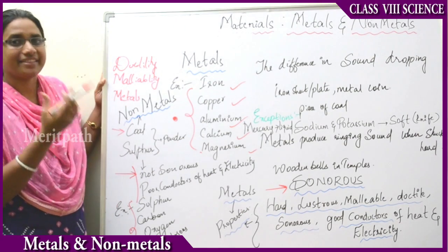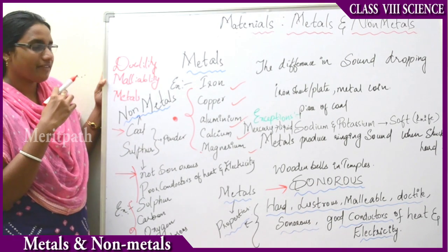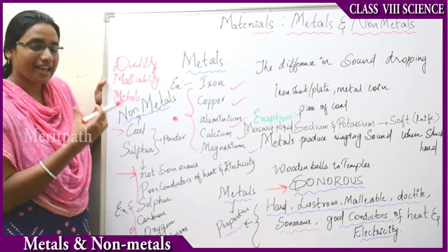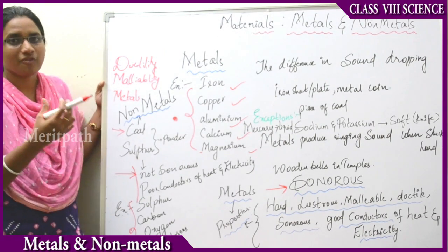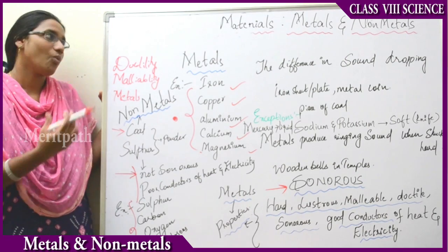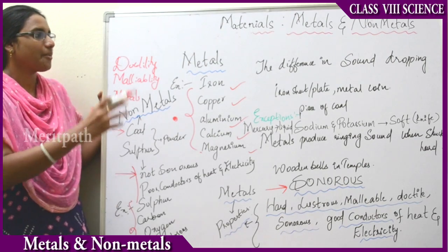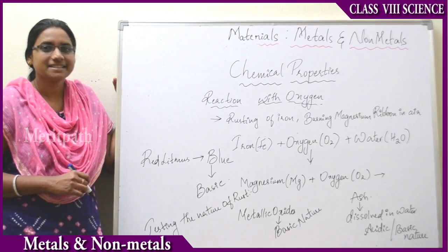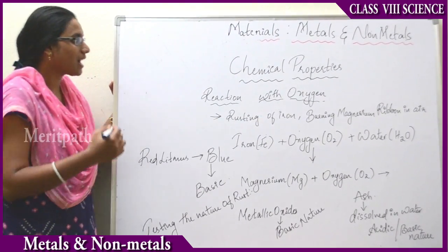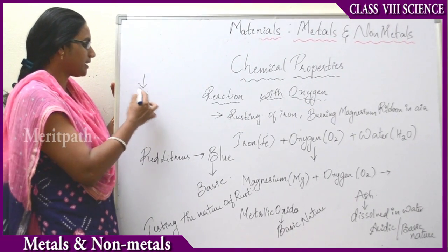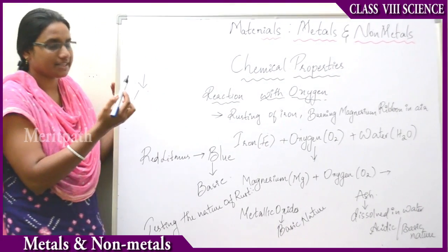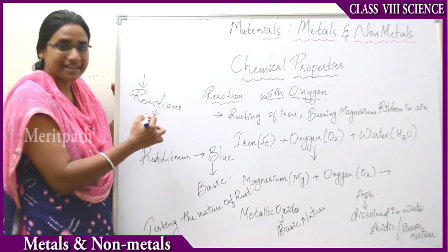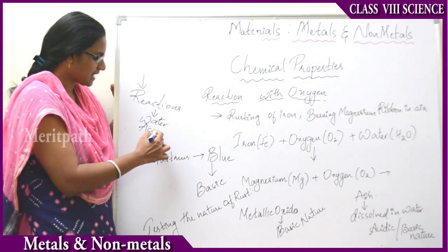Now let us study the chemical properties and their differences between metals and non-metals. Chemical properties refer to the reactions they undergo with the atmosphere — that is, the air. When metals react with air, what do they generate? When non-metals react with air, what do they generate? And when they react with acids and bases, what happens? All these terms and equations come under the chemical reactions and chemical equations of metals and non-metals. Chemical properties are properties which cannot be seen with the naked eye and cannot be felt. These chemical properties are defined as the reactions between metals and non-metals with acids and bases.